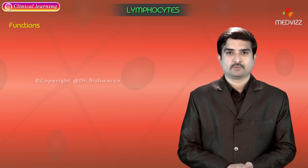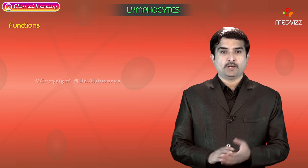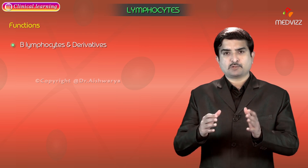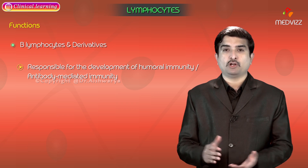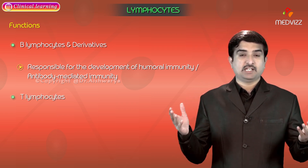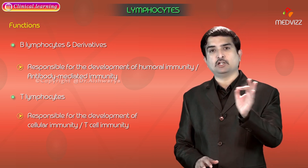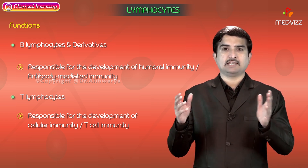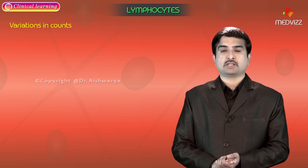Lymphocytes play an important role in immunity. B lymphocytes and their derivatives, the plasma cells, are responsible for the development of humoral immunity, also called antibody-mediated immunity. T lymphocytes are responsible for the development of cellular immunity, also called cell-mediated immunity or T cell immunity.